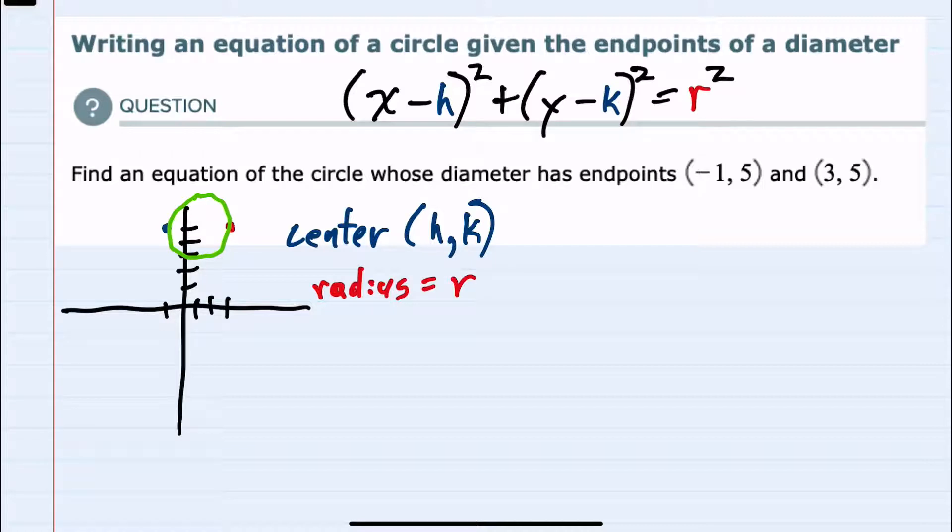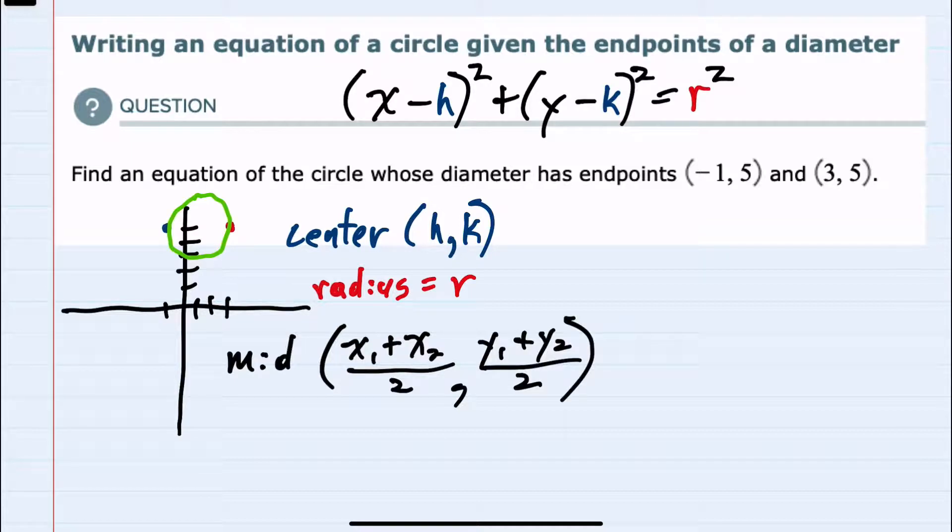Depending on how complicated the problem is, we could use the midpoint formula, which is the average x value of the two points over 2, and then the average y, so also adding the y's over 2. This could give us the midpoint regardless of the two points that we're given.